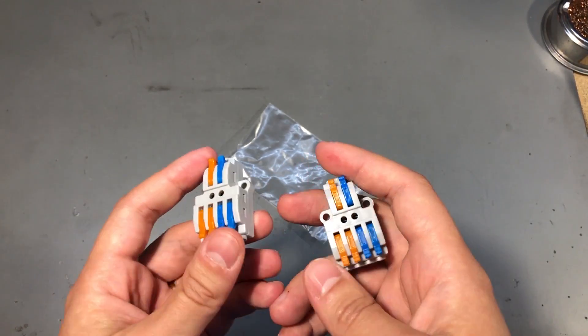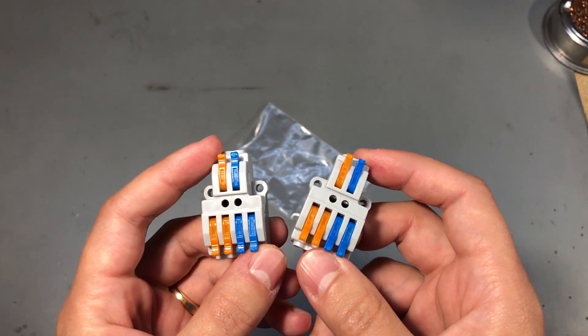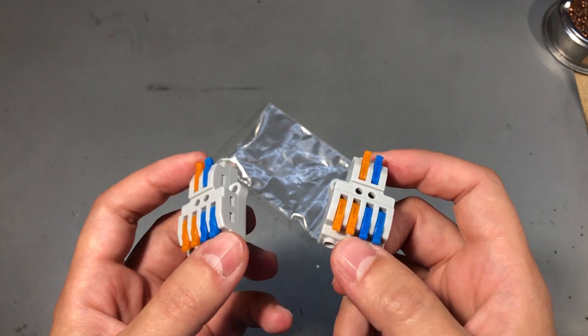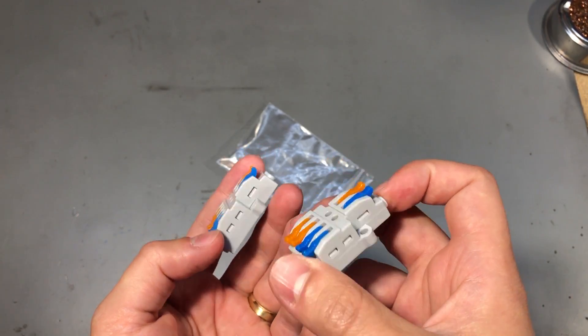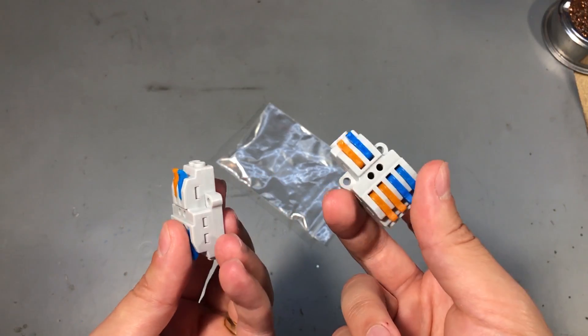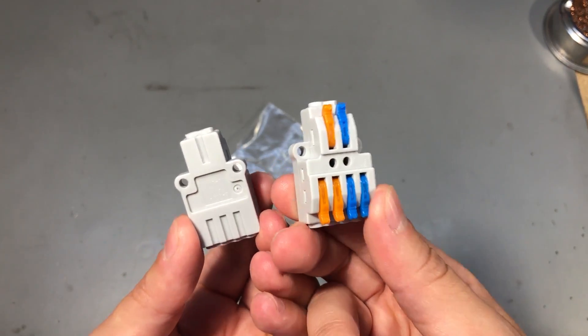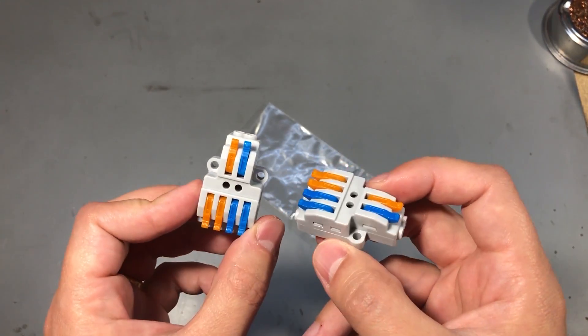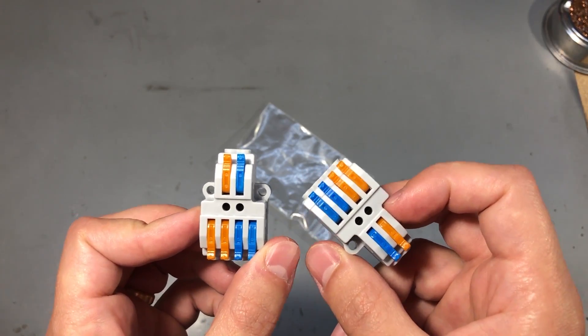For example, an application where I would use something like this would be to splice an additional light bulb socket or plug it onto an existing fixture. So a light bulb is not such a high load and this would probably make the job quick and easy. As always you'll find the link to this product in the description below the video.